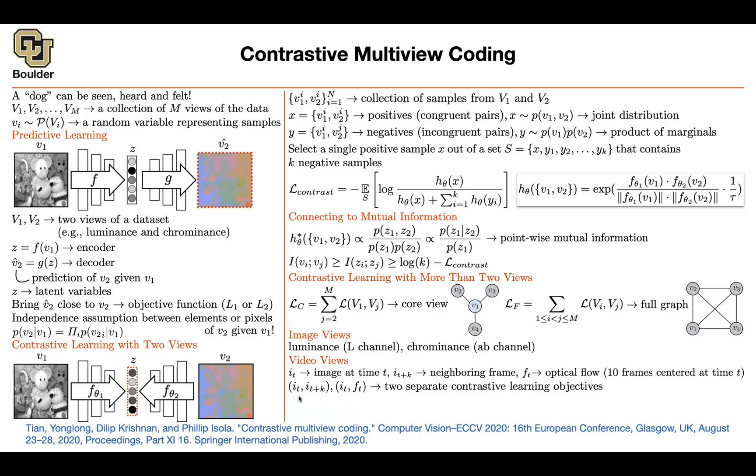And then you can have two separate contrastive losses. One of them is between frames, perhaps consecutive frames of a video, and the other one could be between a frame and the corresponding optical flow. These are going to give you two different contrastive losses that you can sum them up, perhaps weight them accordingly.